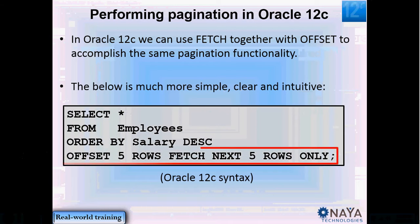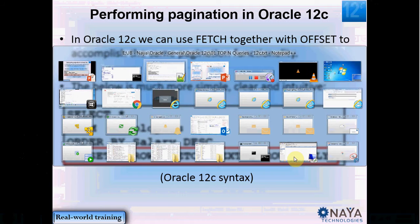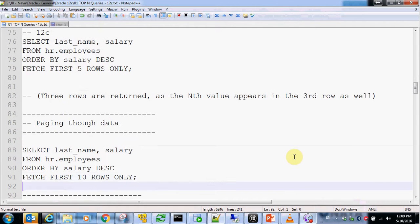As of Oracle 12c, no need for this anymore. We can use the FETCH clause together with the OFFSET clause. OFFSET FIVE ROWS — meaning the query will actually start at six, at the offset you specify plus one — so I will be starting at row number six, and then I will FETCH the NEXT FIVE ROWS ONLY, meaning rows 6 through 10. Let's take a look at an example of pagination.